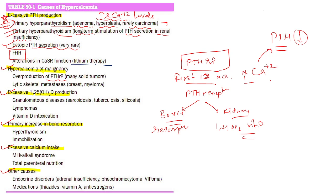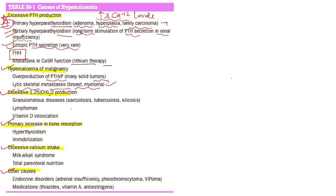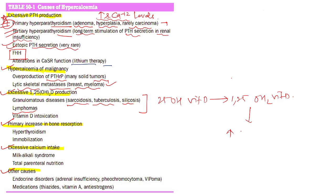Another mechanism by which tumors cause hypercalcemia is lytic skeletal metastasis, causing bone lysis and hypercalcemia with inhibition of PTH — for example in breast carcinoma and myeloma. Hypercalcemia associated with granulomatous diseases like sarcoidosis, tuberculosis, silicosis, or tumors like lymphoma is caused by excessive 1,25-dihydroxy vitamin D production. These diseases convert more 25-hydroxy vitamin D to 1,25-dihydroxy vitamin D, leading to increased intestinal calcium absorption and suppressed PTH.